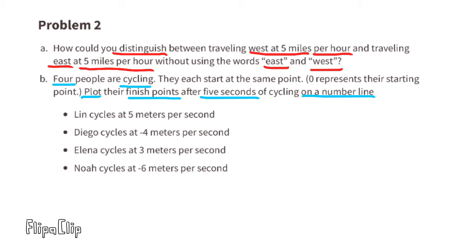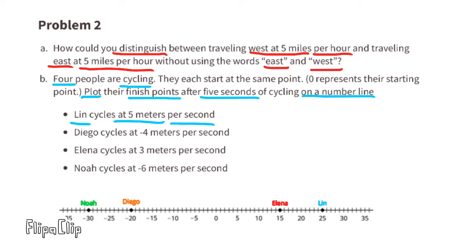Problem 2b: Four people are cycling; they each start at the same point. Zero represents their starting point. Plot their finish points after five seconds of cycling on a number line. Lin cycles at five meters per second, so five meters per second times five seconds means Lin travels 25 meters.